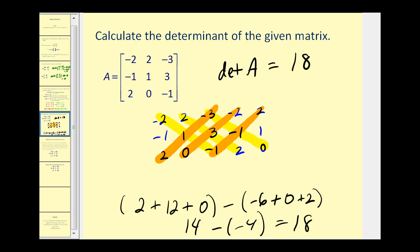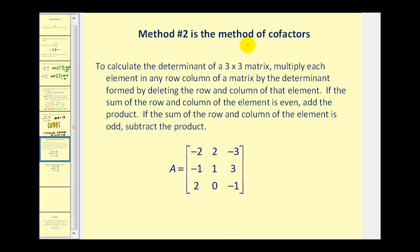Now let's take a look at a second method for determining a three by three determinant, called the method of cofactors. To calculate the determinant of a three by three matrix, we multiply each element in any row or column by the determinant formed by deleting the row and column of that element. If the sum of the row and column of the element is even, we add the product. If the sum is odd, we subtract the product.